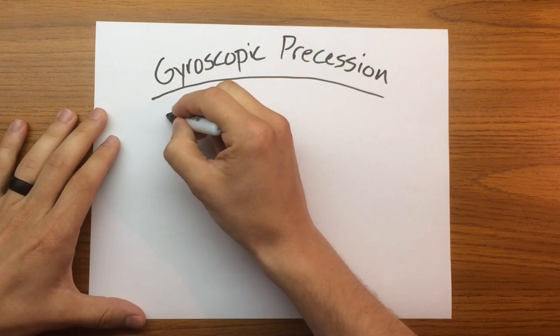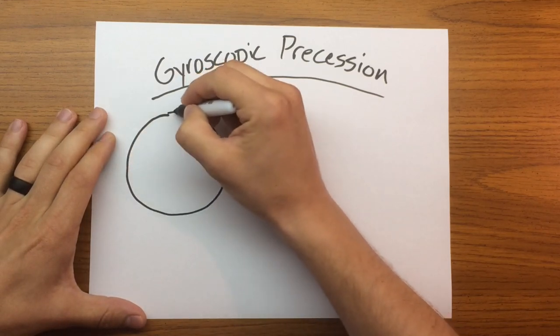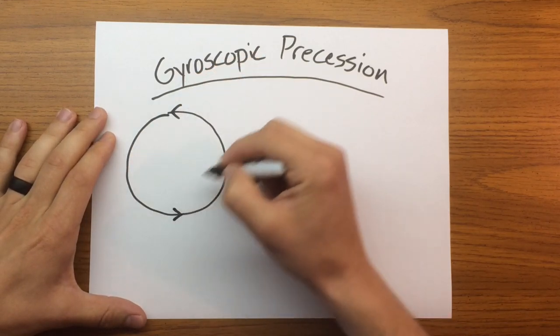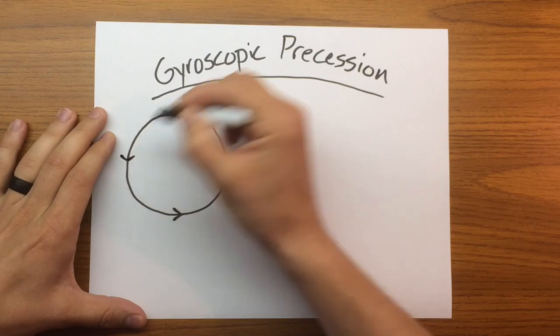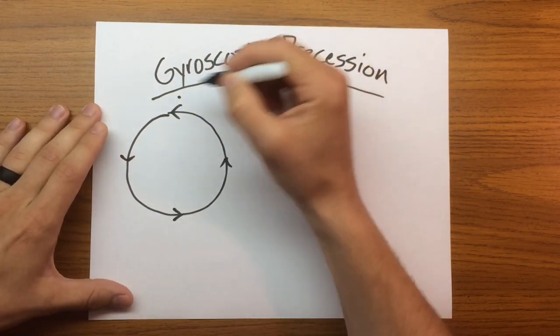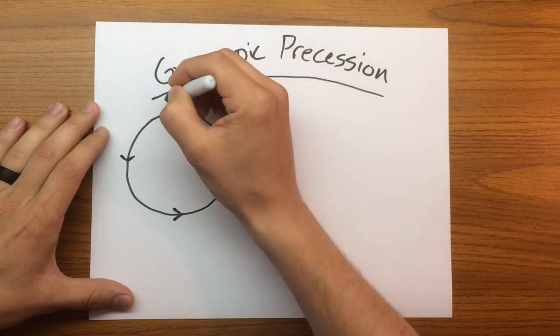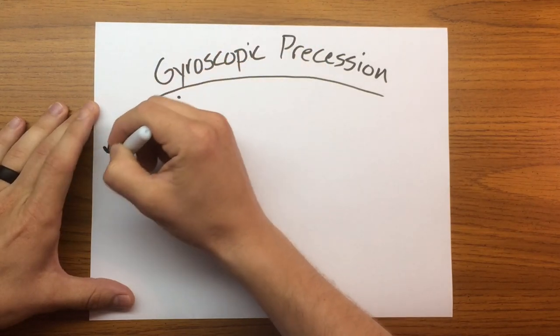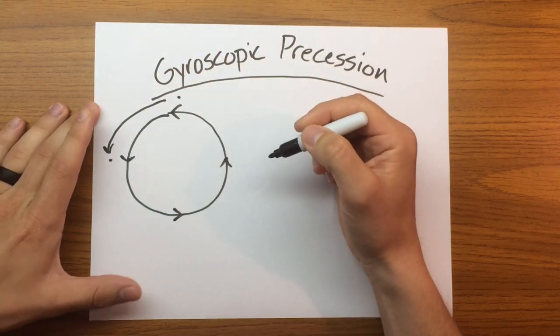So what does that mean? Say we have an object that is rotating. In this case, we'll do counterclockwise. This means that if I have any kind of action, do any kind of input at this point in the disc or in this point of the rotating body, it will actually occur 90 degrees later.